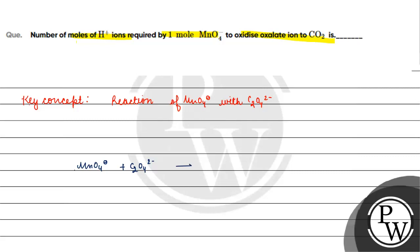In this reaction, permanganate ion is the oxidizing agent, and the product is Mn²⁺. What is the Mn oxidation state in MnO4⁻? We solve: x + 4×(−2) = −1, so x = +7. Here the Mn oxidation state is +7, and in the product it becomes +2 — this is reduction.